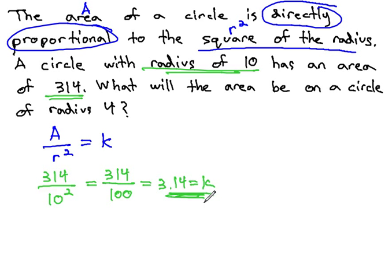It seems to make sense that the constant of variation for a circle would be pi. This, in fact, is where we get pi from.